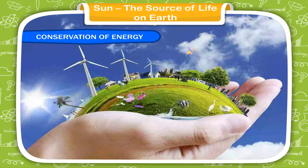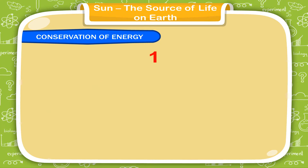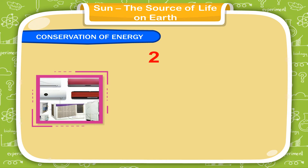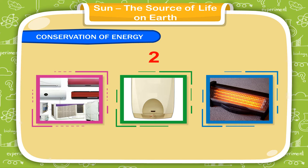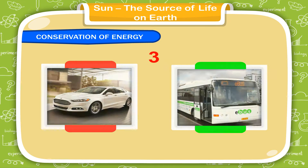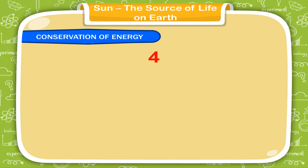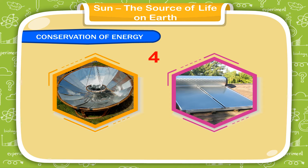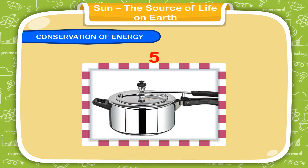Conservation of energy — we should keep these facts in mind to save energy. Switch off fans, lights and electrical gadgets when not required to save electricity. Air conditioners, geysers, heaters, etc. should be used only when their use is absolutely essential. Do not drive vehicles if they are not required; you can use public transport. Use solar cookers to save gas and solar heaters to save electricity. Use a pressure cooker for cooking food as it saves fuel energy.